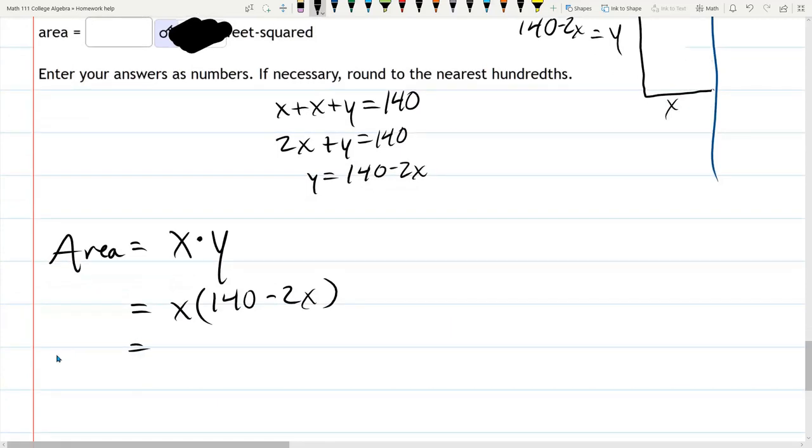Now, this is a function of X. So I'm going to call it f(X). And distributing the X in, we have 140X minus 2X squared. Usually we put our X squared first. Negative 2X squared plus 140X.